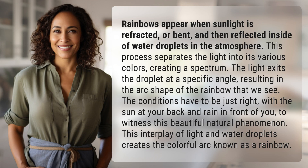Rainbows appear when sunlight is refracted, or bent, and then reflected inside of water droplets in the atmosphere. This process separates the light into its various colors, creating a spectrum.